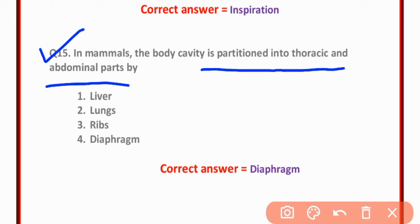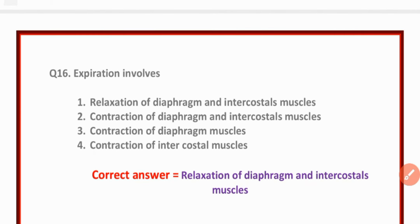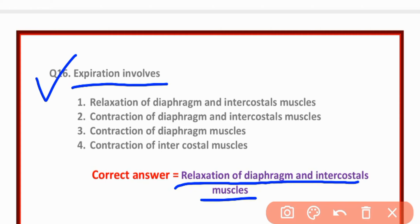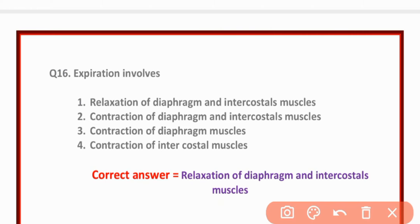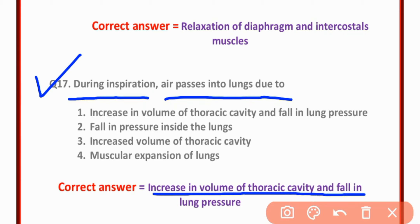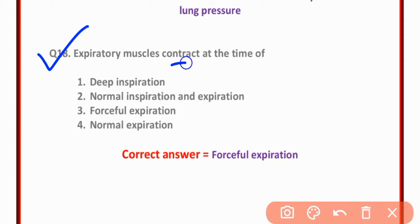MCQ number fifteen: In mammals, the body cavity is partitioned into thoracic and abdominal parts by the diaphragm — option four is correct. MCQ number sixteen: Expiration involves relaxation of diaphragm and intercostal muscles — option A is correct. MCQ number seventeen: During inspiration, air passes into the lungs due to increase in volume of thoracic cavity or fall in inner lung pressure — option A is correct. MCQ number eighteen: Expiratory muscles contract at the time of forceful expiration — option three is correct.